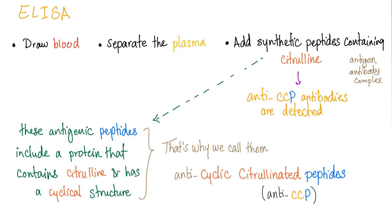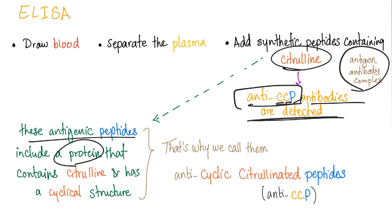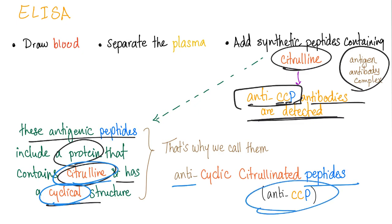So how do we test for anti-CCP? By ELISA. First you draw blood, separate the plasma, and add some synthetic peptides containing citrulline. You are testing for anti-CCP antibodies — anti-cyclic citrullinated peptides — in the plasma. If they are present, an antigen-antibody complex will form. These antigenic peptides include a protein containing citrulline with a cyclical structure, which is why we call the antibodies anti-cyclic citrullinated peptides.